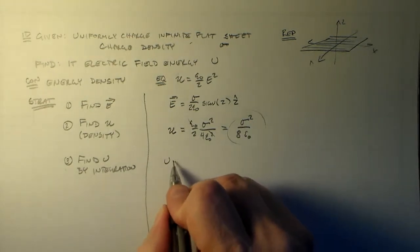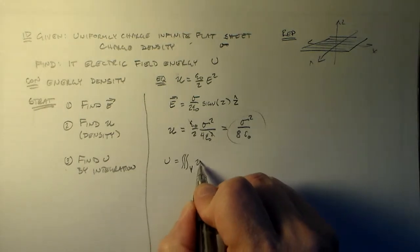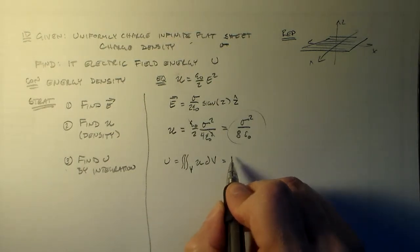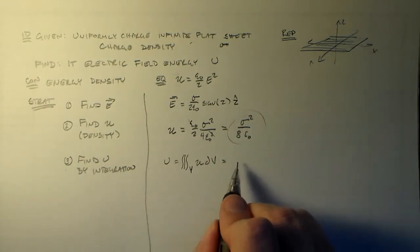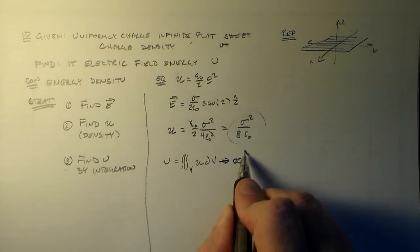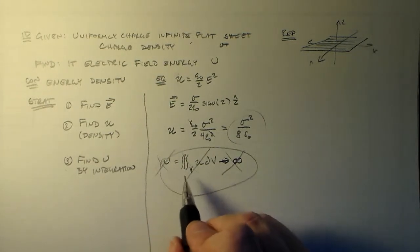Then we want to integrate this. We want to integrate this over all space. And if we do that, we have a constant integrated over an infinite area. We get something that goes to infinity. And so that's no good. That's the correct answer, but it's not good.